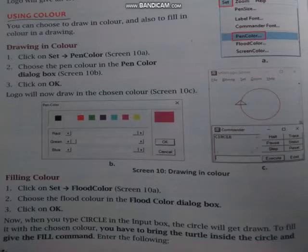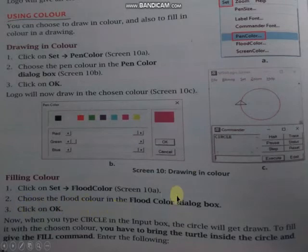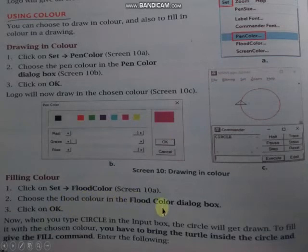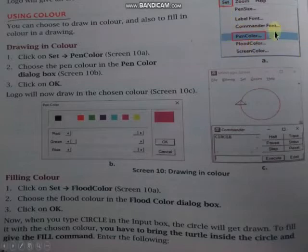First of all, हम यहाँ पर Set menu में click करेंगे, then after यहाँ से हम choose करेंगे flood color option. Then choose the flood color in the flood color dialog box. जैसे यहाँ पर हमें pen color का dialog box मिलता है, वैसे ही flood color में flood color dialog box मिलता है। यहाँ पर Set menu में list of options मिलता है — pen color option, then flood color option.